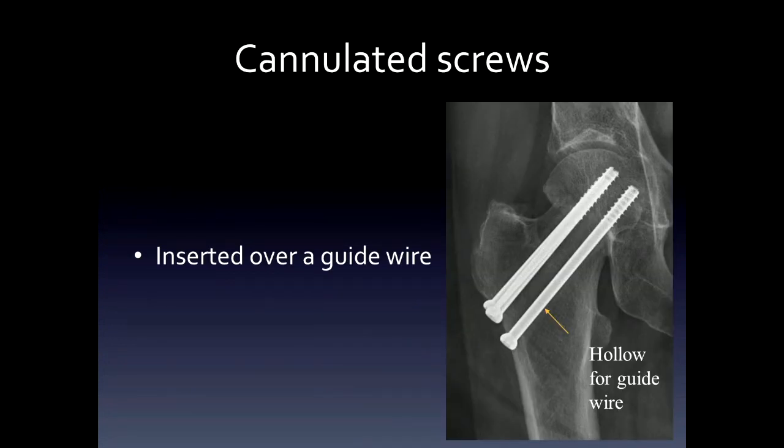There are several kinds of screws we'll go through briefly. Cannulated screws are hollow inside and allow them to be placed over guide wires; the typical place for this is in the femur.